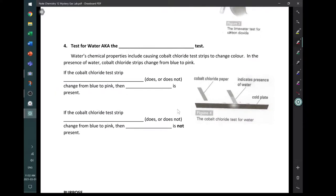And then the last test here involves water droplets. It's a test for water. There are test strips called cobalt chloride test strips. Water's chemical properties include causing cobalt chloride test strips to change color. In the presence of water, cobalt chloride strips change from blue to pink. So if the cobalt chloride test strip does change from blue to pink, then water is present. If the cobalt chloride test strip does not change color, then water is not present.